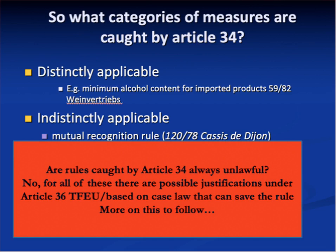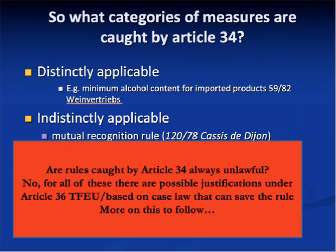Article 36 TFEU provides that the provisions in Articles 34 and 35 shall not preclude — so it's an exception — prohibitions or restrictions on imports, exports or goods in transit justified on grounds of public morality, public policy or public security, the protection of health and life of humans, animals and plants, the protection of national treasures, or the protection of industrial or commercial property. That is a closed list of exceptions with case law on each ground. You'll see from the case law under Article 36 that if the Court of Justice thinks this is actually a disguised restriction on trade, then the Court will find it is not a justified rule under Article 36.